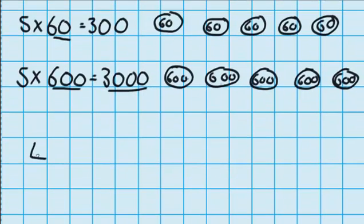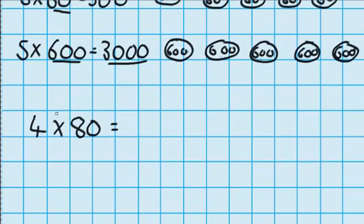Now let's see if we can use this pattern to help us answer some questions. Let's imagine we had 4 groups with 80 suites in each group. Well, the first thing I do is I think to myself, what question do I know that could help me answer this? Well, I know that 4 times 8 is on my tables. And I know that the answer to that is 32.